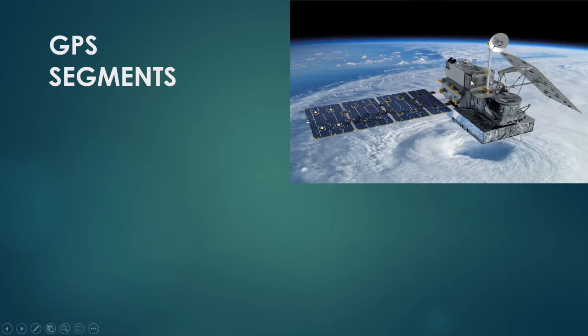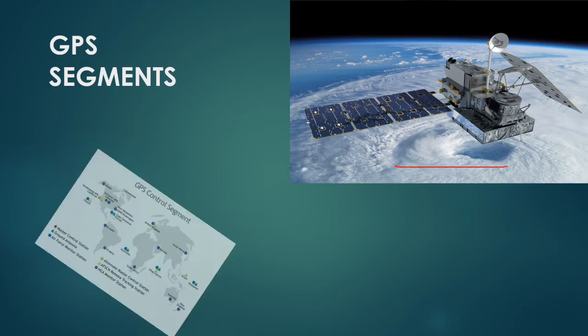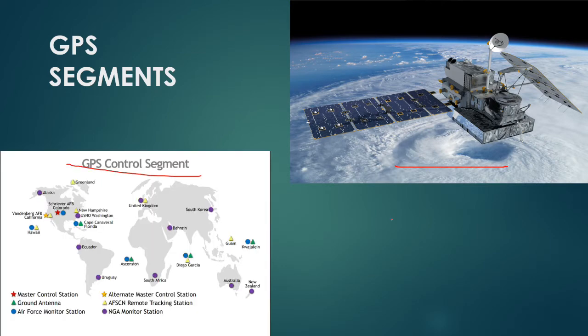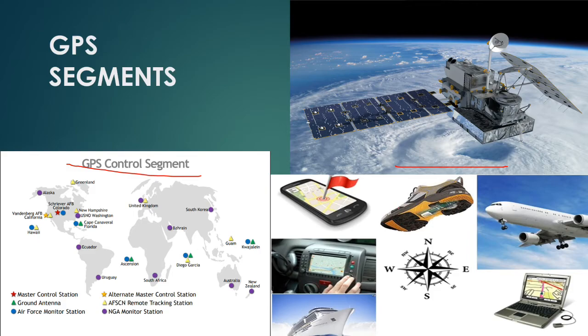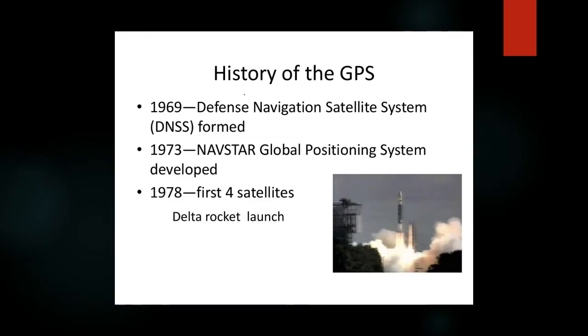GPS has three segments. The first is the space segment, the second is the control segment, and the third is the user segment. Let's talk about the history of GPS.